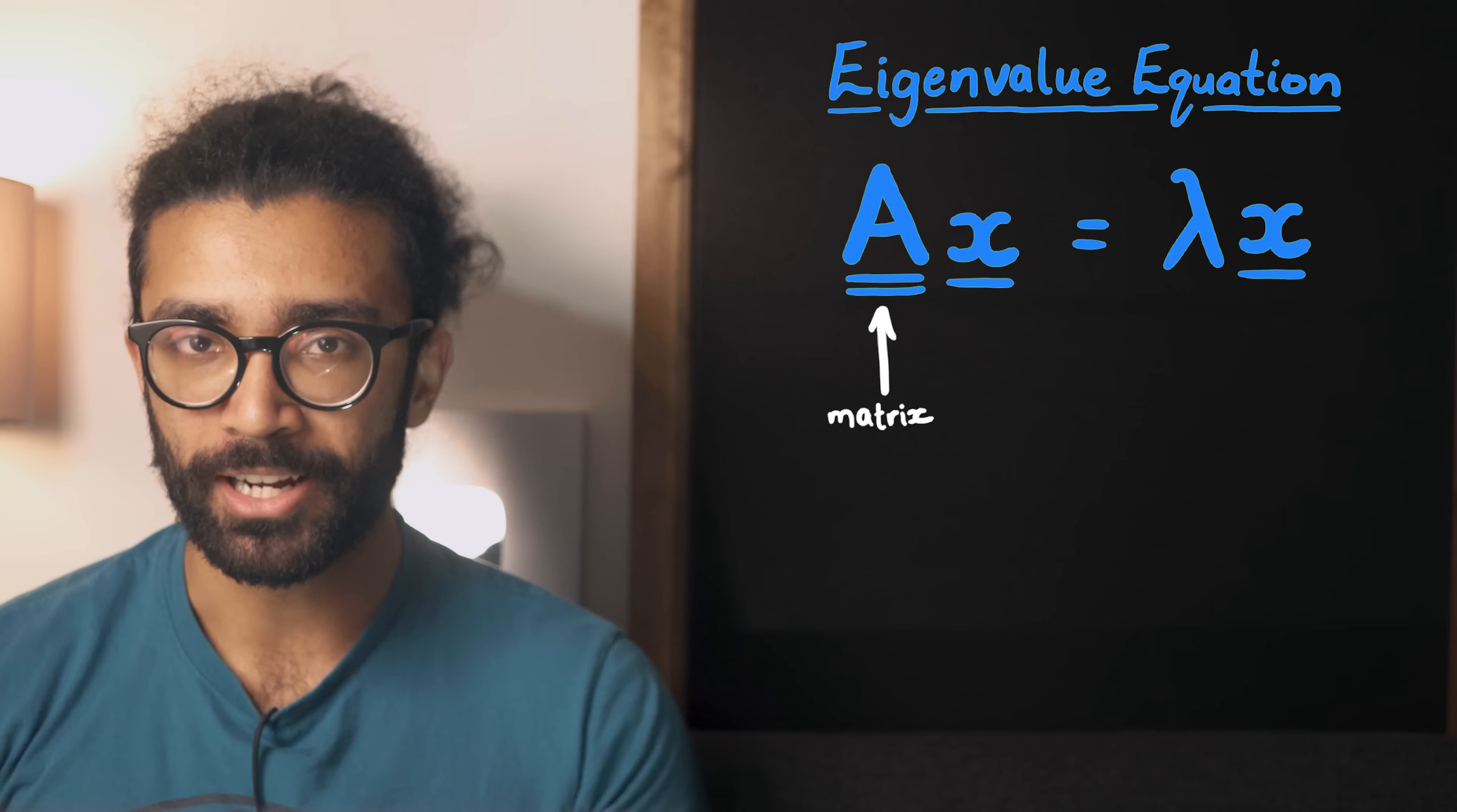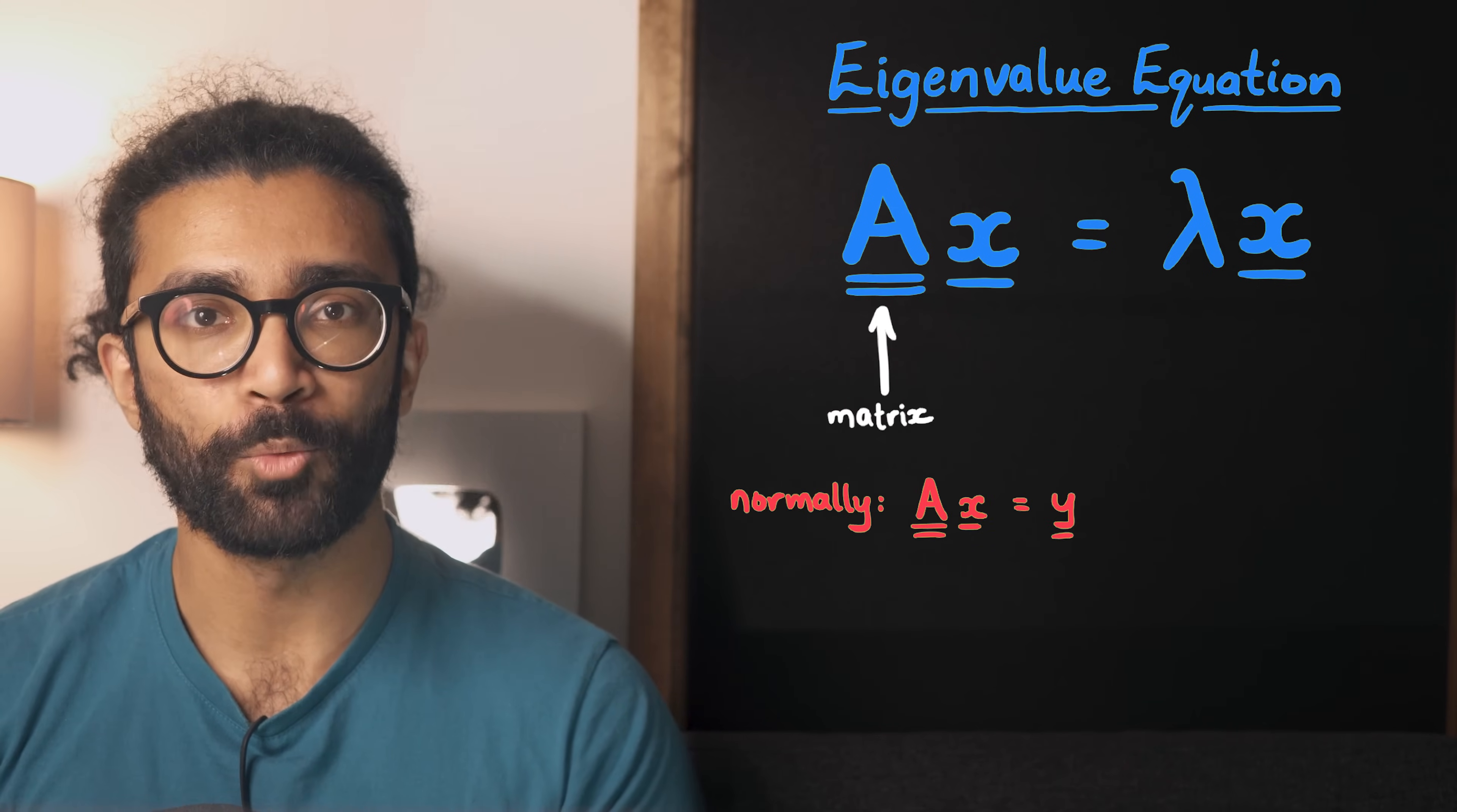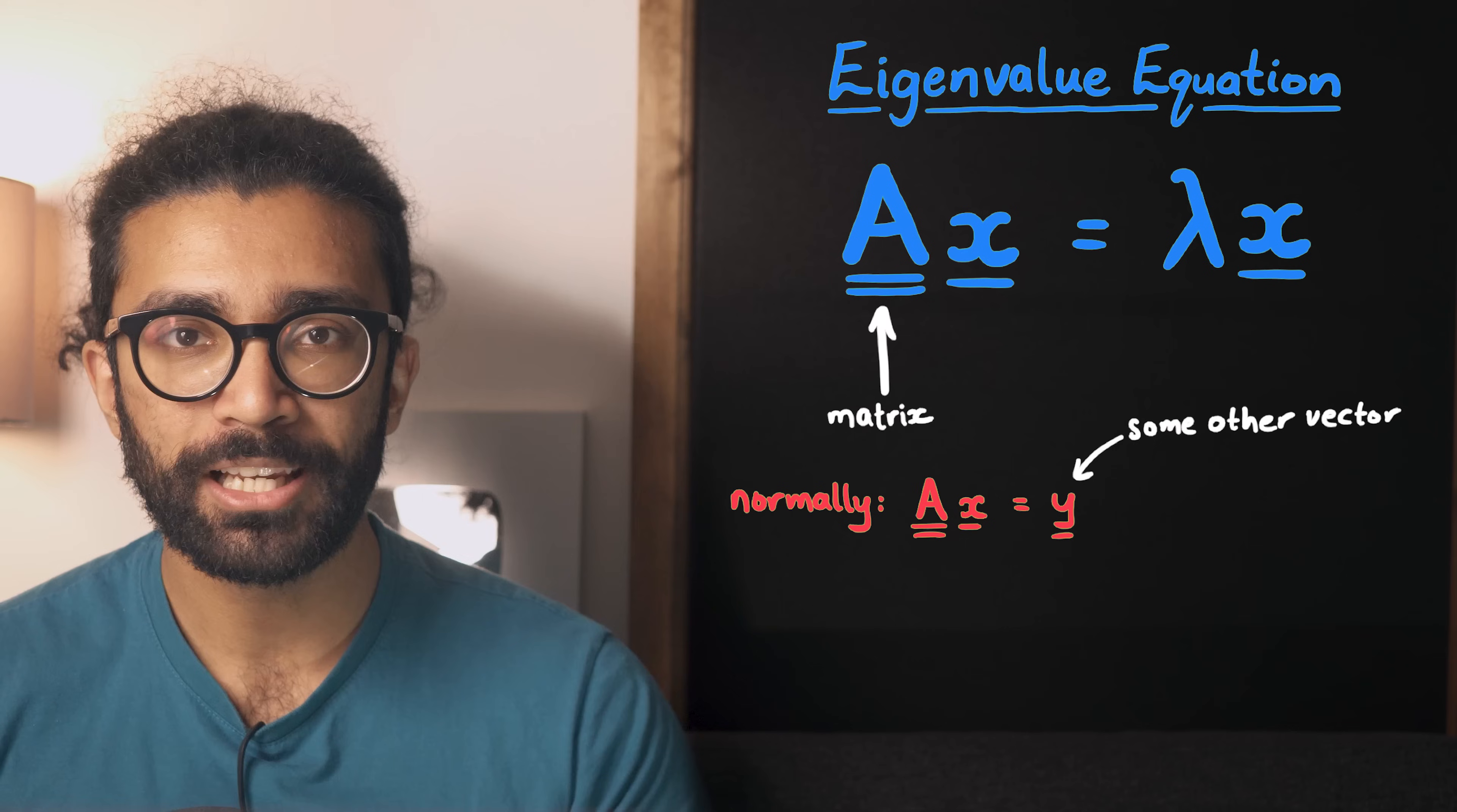Now, A can be thought of as a matrix that can be applied to the vector to transform it in some way. Or in other words, give us another vector pointing in some other direction.